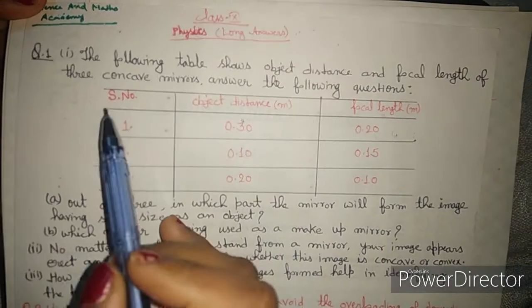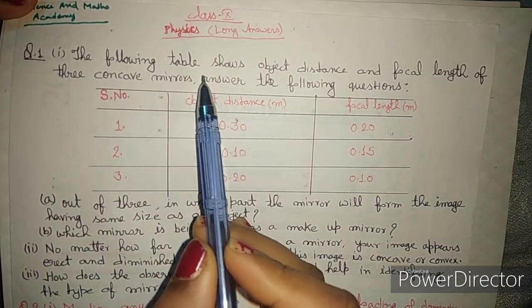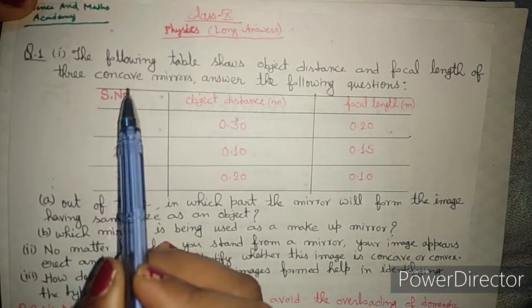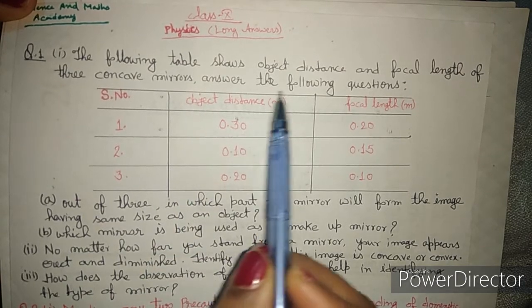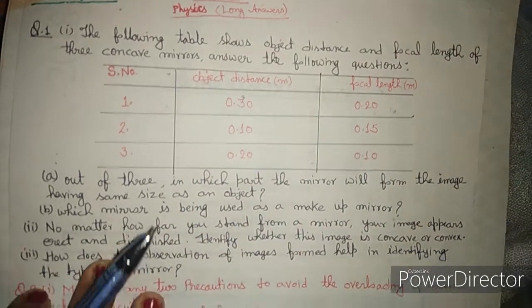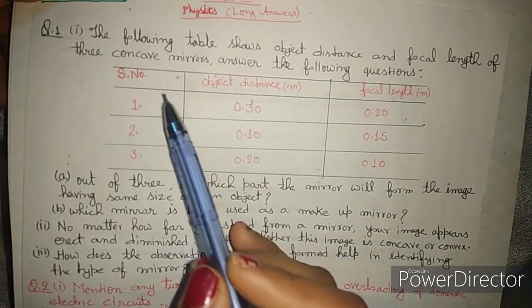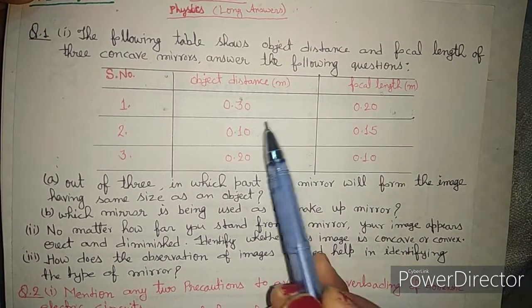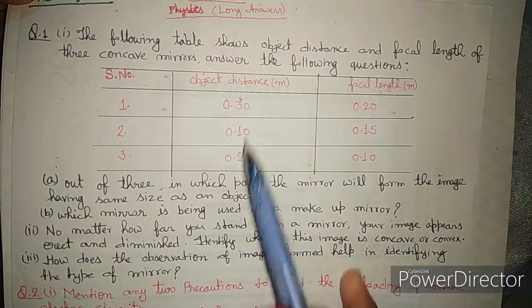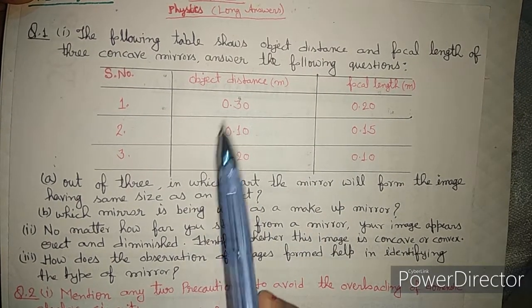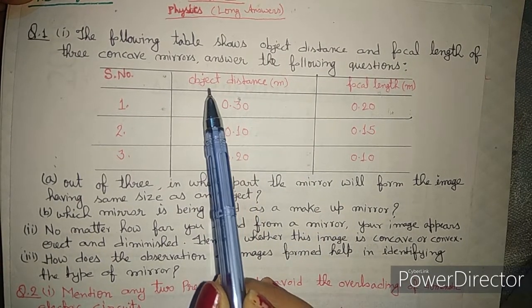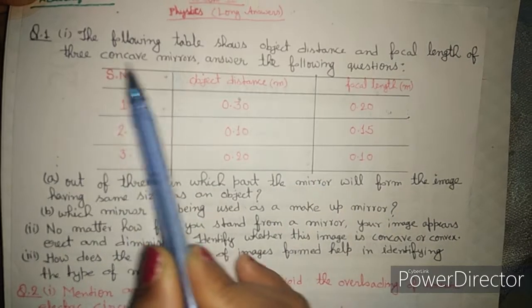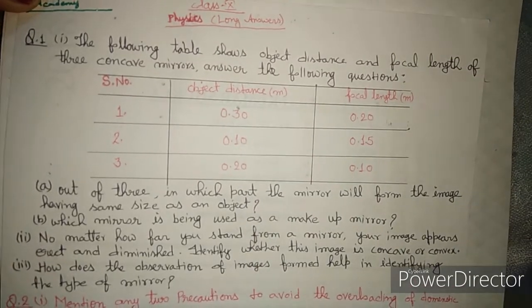The first question shows a table of object distance and focal length for three concave mirrors. You have three cases given here with object distance and focal length for each. We need to identify which values correspond to which concave mirror based on what we discussed about concave mirrors.